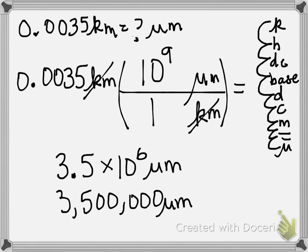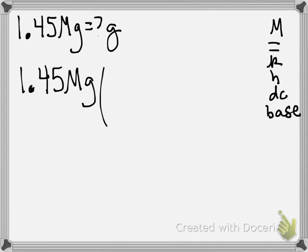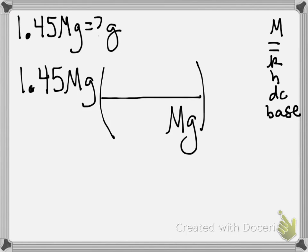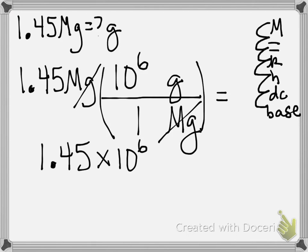Question number seven asks: if I have 1.45 megagrams, how many grams is that? Here we have mega — King Henry Died By — and there's my base. I start with 1.45 megagrams. Megagrams have to go on the bottom. Grams go on the top. A megagram is larger: 1, 2, 3, 4, 5, 6 — 10 to the 6th. My answer is 1.45 times 10 to the 6th grams.